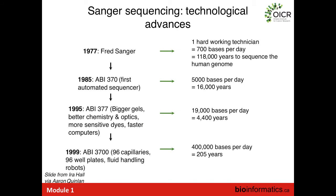This level of automation and simplification of chemistry allowed the throughput of Sanger sequencing to vastly increase. When Sanger invented his sequencing in 1977, a very hard-working technician might sequence around a thousand bases per day. If you wanted to sequence the entire three billion base pair human genome, that would take about 120,000 years — obviously not very practical.